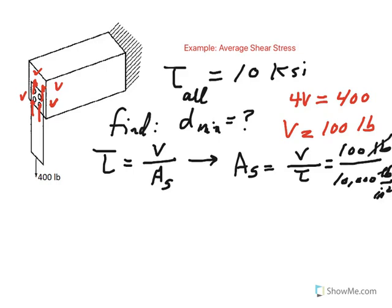100 divided by 10,000, we can solve for this area. So that becomes 0.01 and then the unit should be inch squared. So the minimum area that we need for each bolt should be 0.01 inch squared.